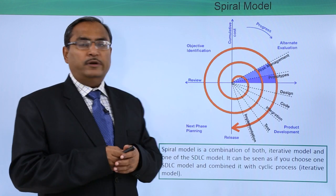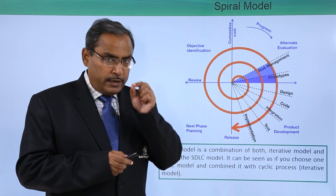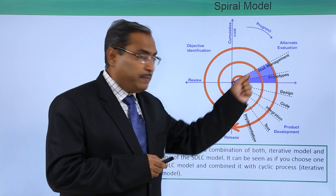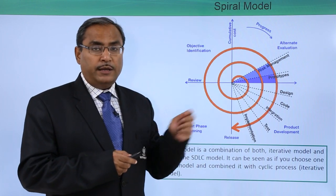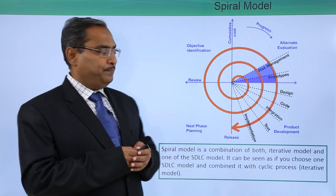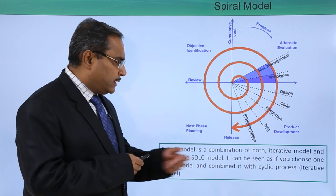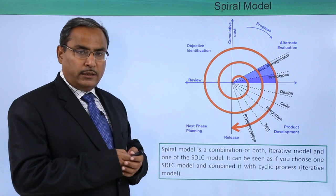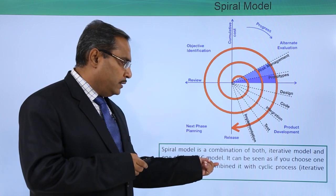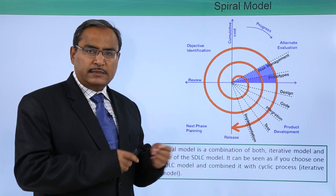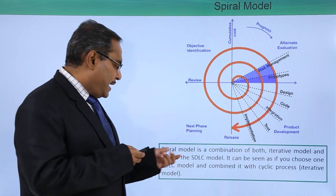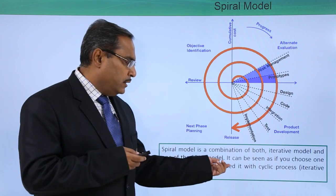In this way the SPIRAL model will work. Looking at this particular figure, you can find that risk management is taken care of in the SPIRAL model — that is the uniqueness of this model. The SPIRAL model is a combination of both the iterative model and one of the SDLC models. The iterative model means it will go on doing iterations — iteration means looping.